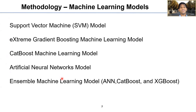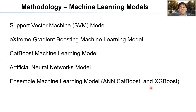The ensemble model is created using linear regression of the values predicted by the ANN, CatBoost, and XGBoost. Considering the time limit, I am skipping the specific details for each of these models in this presentation.